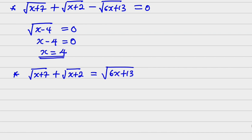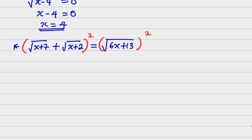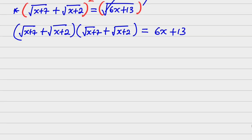The next step is to square both sides. On squaring, the left side becomes: root of (x plus 7) plus root of (x plus 2), all times itself — equals just 6x plus 13, because the square cancels the root on the right. Now I expand the left hand side.